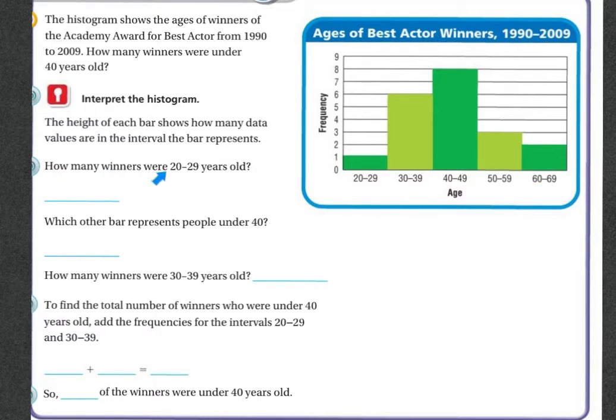So how many winners were between 20 and 29 years old? So here's 20 to 29, and it looks like there was only 1. Which other bar represents people under 40? This one also represents people under 40, so 30 through 39. How many winners were between 30 through 39? I'm going to follow this up, and it looks like it was 6.